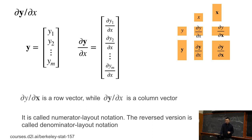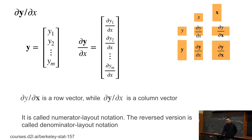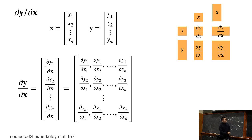We can also use denominator layout — if x is a vector we get a column vector, and if y is a vector we get a row vector; we just switch them. In the last case, when both y and x are vectors, the matrix we get is called the Jacobian matrix.